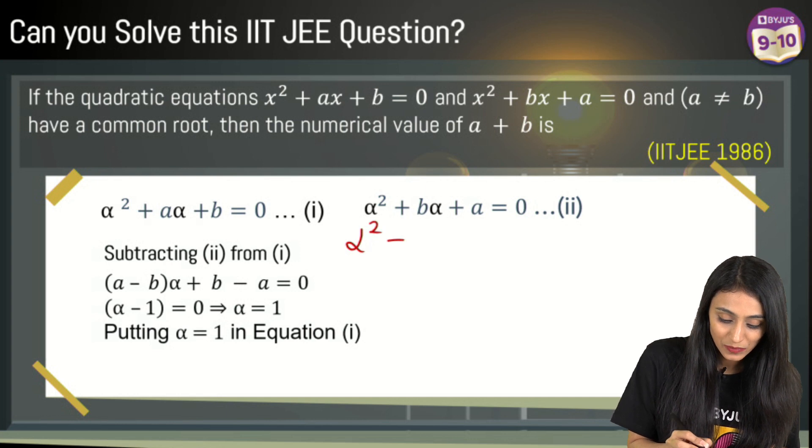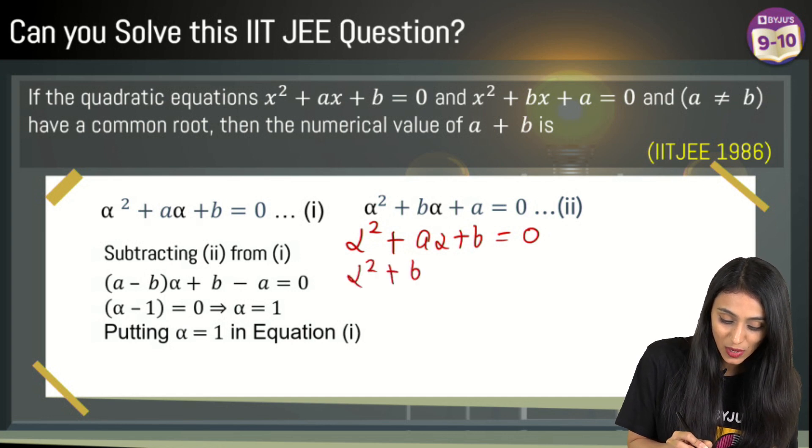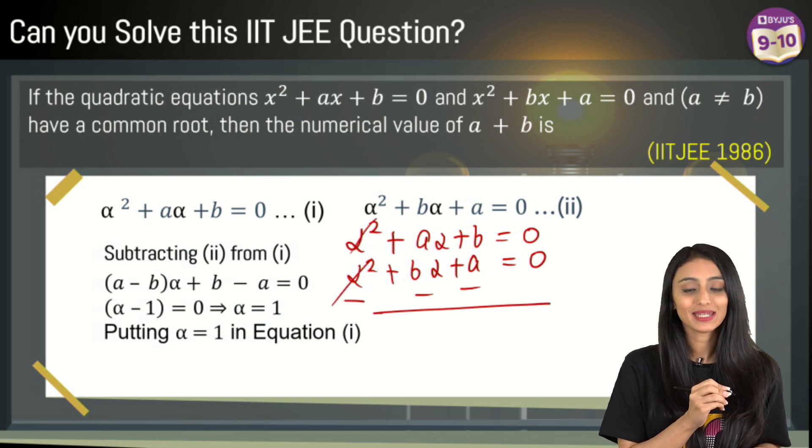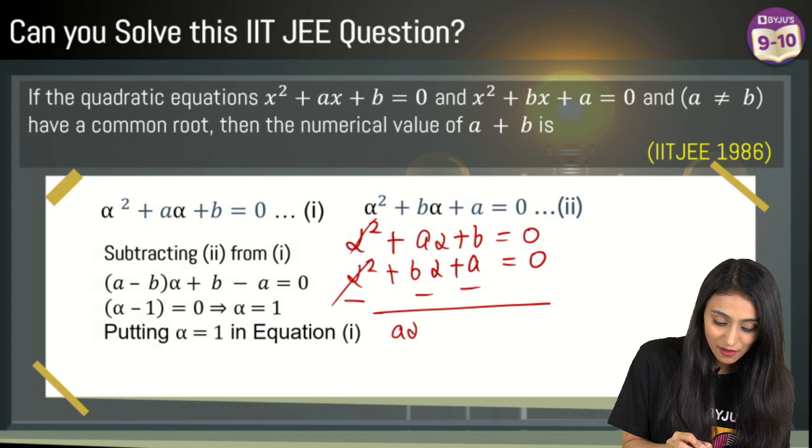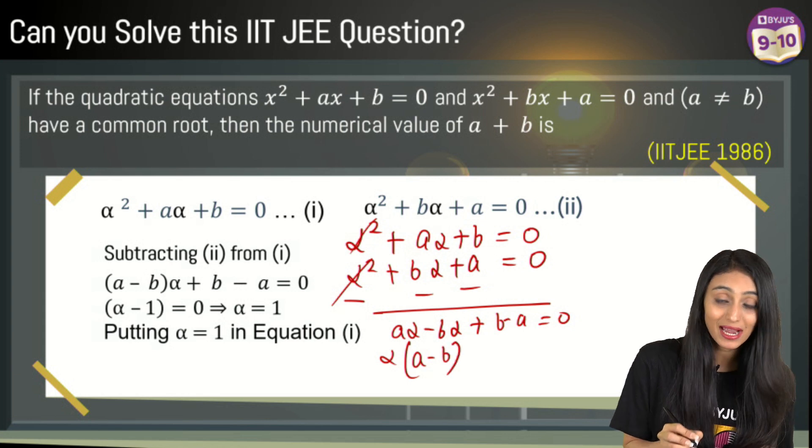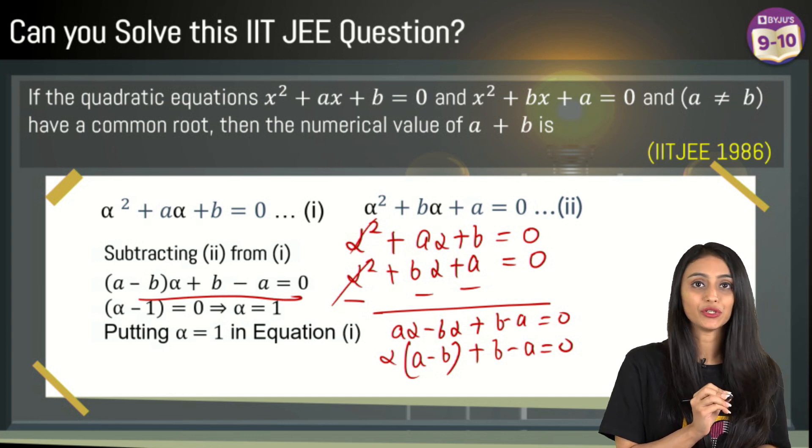We have α² plus aα + b = 0, right? This is the first equation and second equation is α² + bα + a = 0. Once you subtract, all the signs change. Alpha square, alpha square gets canceled out. We have aα - bα + b - a = 0. Let's take α common from here, I have (a - b) plus b - a equals to 0 and this is what is written here.